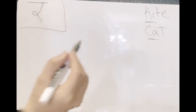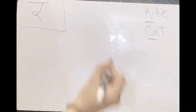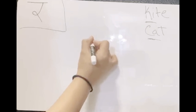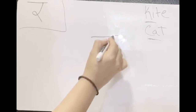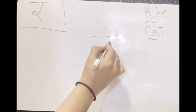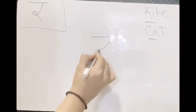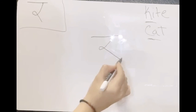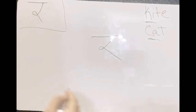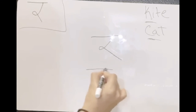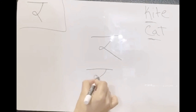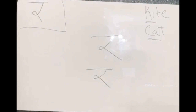So to write kakka, let's begin with a straight line and bring half a u, make a loop, and finish it off with a straight line again. Kakka, kakka kameez.